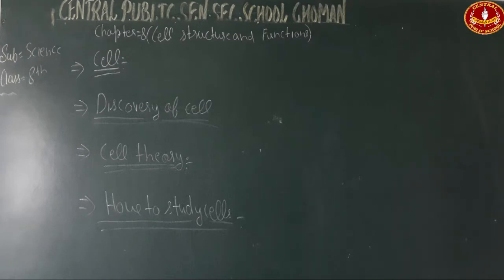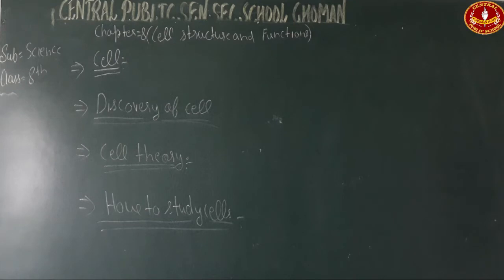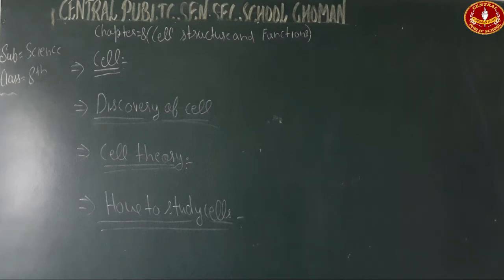Everything that animals and trees have — their food habits, all the things they need to live — in all animals, flowers, trees, and birds, one thing is common: a very small structural unit of the body, which is called a cell. So in any living organism, the cell is the structural and functional unit of the body.